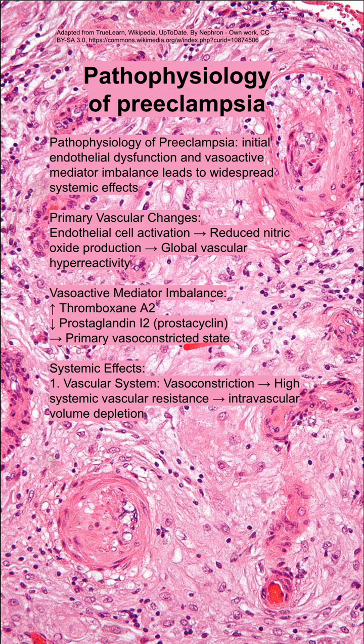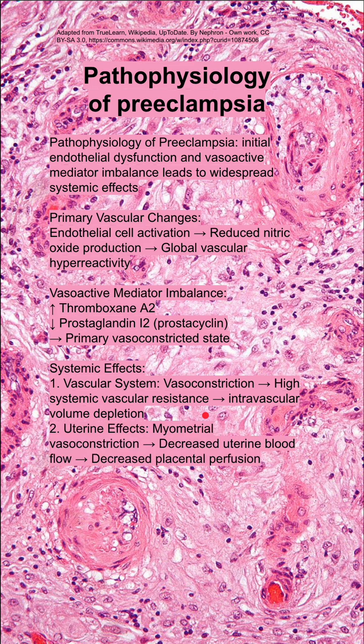When you have vasoconstriction, you have systemic effects throughout the body. In the vascular system, vasoconstriction leads to high systemic vascular resistance, which can lead to intravascular volume depletion. If all of your vessels are clamped down, they will have a smaller volume and you'll have volume depletion.